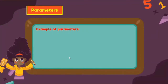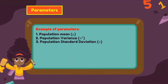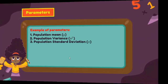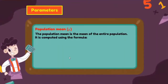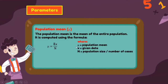Some examples of parameters include population mean, population variance, and population standard deviation. The population mean is the mean of the entire population. It is computed using the formula: μ = Σx / N, where μ corresponds to the population mean, x is the given data, and N is the population size. To solve for the population mean, you get the summation of x divided by the population size N.